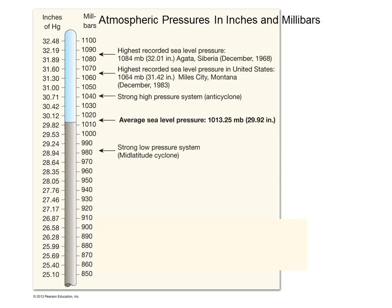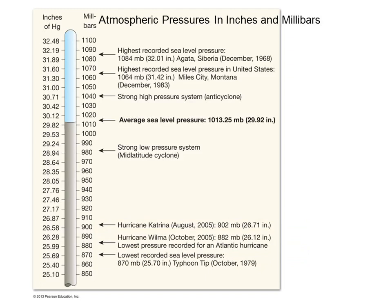So the lows are the exciting ones. Lows bring what we call severe weather. Starting close to home — tornadoes. In the middle of a tornado, in the eye of a tornado, is a low pressure. Hurricanes — in the middle of a hurricane, low pressure. And actually, how low the pressure is in the eye of a hurricane is actually a marker for how intense the hurricane is.